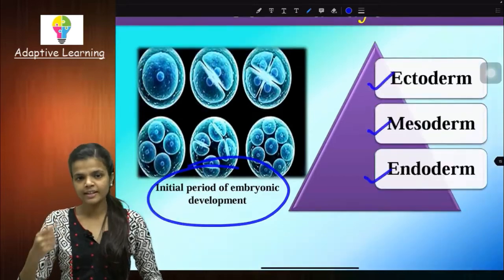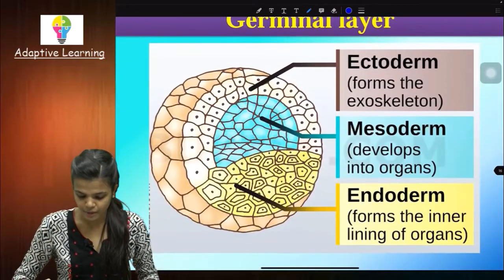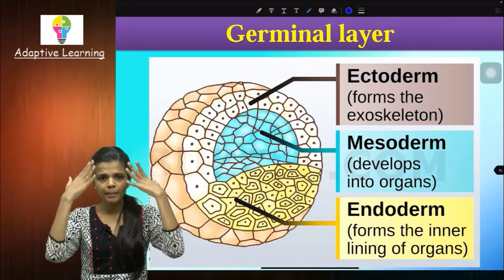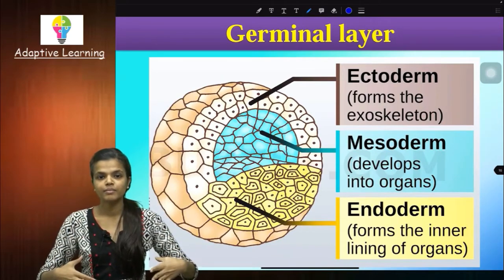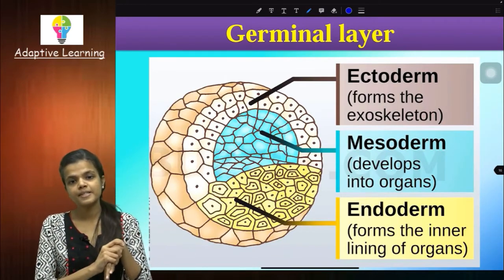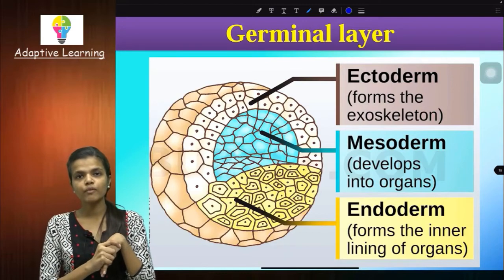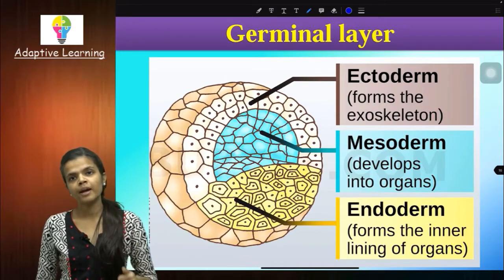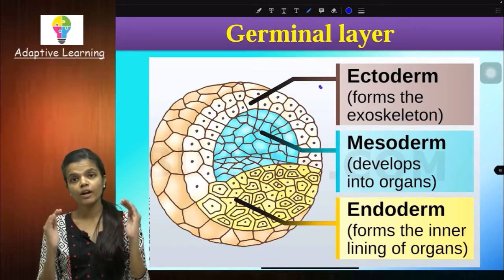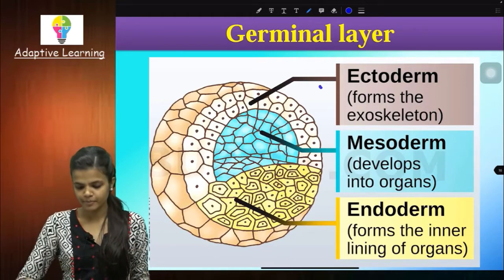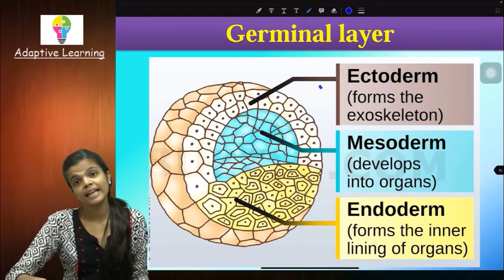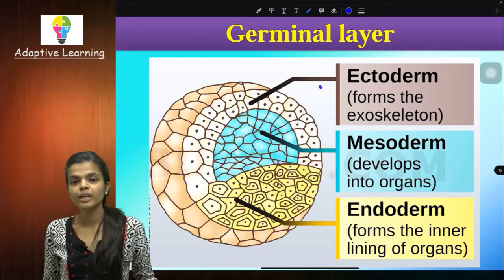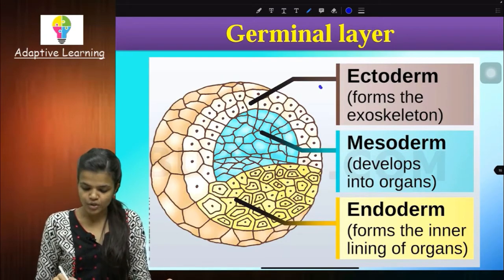Let's understand ectoderm, mesoderm, and endoderm with this particular diagram. Ectoderm forms my outer parts — my skin, my exoskeleton. Mesoderm forms what? Kidney, liver, my organs. And the inner lining of those organs — for example the inner lining of my alimentary canal — is formed from endoderm. So whether your organism contains all three germ layers or only two germ layers, depending on this they are again classified into groups.